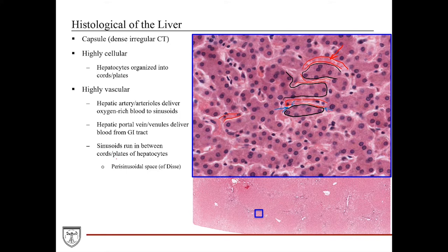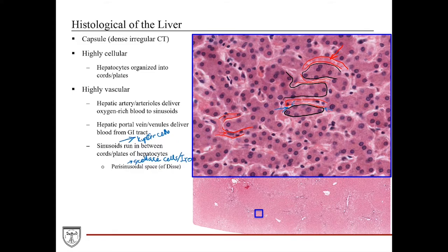Within the perisinusoidal space are stellate cells, also called Ito cells, which provide supportive roles in hepatocyte response to injury and store vitamin A. Within the sinusoids are the resident macrophages of the liver called Kupffer cells, which monitor sinusoidal contents and phagocytose antigens, dead cell debris, or microbes. Kupffer cells are easier to identify than stellate cells — they're positioned within the sinusoids, have more elongated nuclei, and may show cytoplasmic extensions similar to dendritic cells.